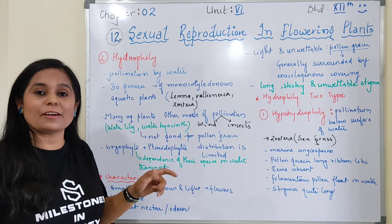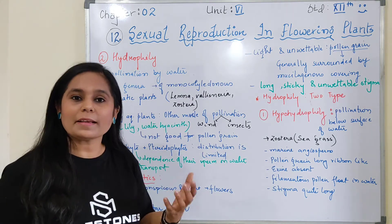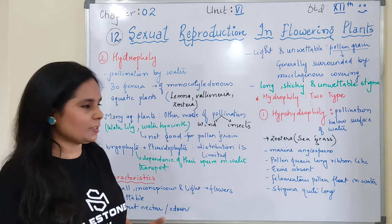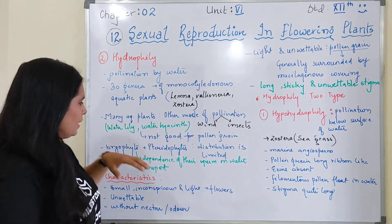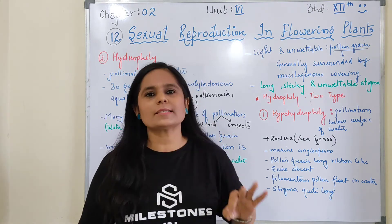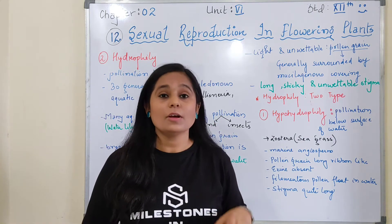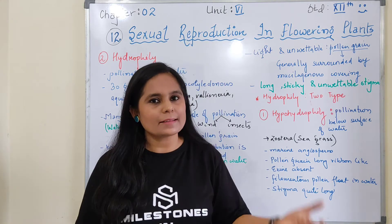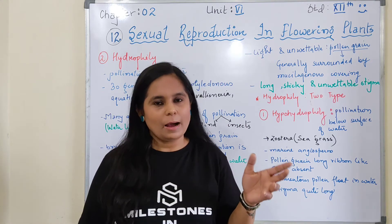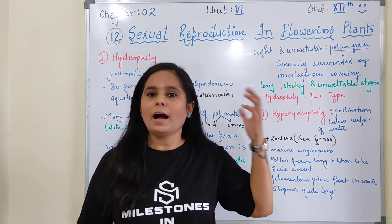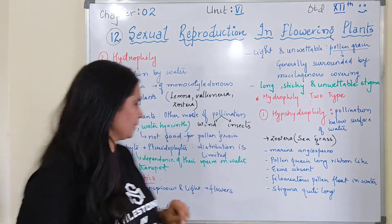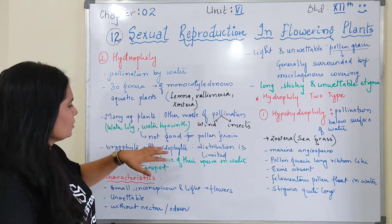Many aquatic plants may go for other pollinating agents apart from water. There are aquatic species which use wind or insects for pollination, such as water lily and water hyacinth. So remember - just because the plant is aquatic does not mean it undergoes hydrophily. If water lily or water hyacinth appears in an MCQ, check which agent is actually responsible.